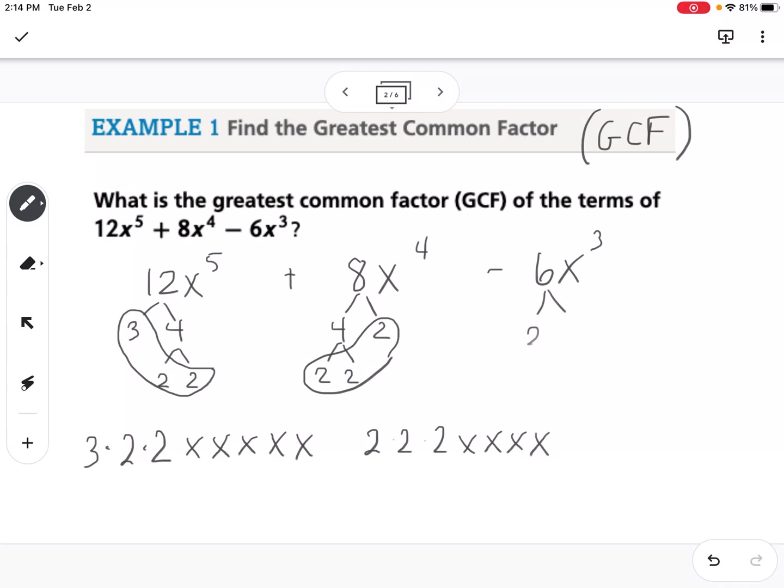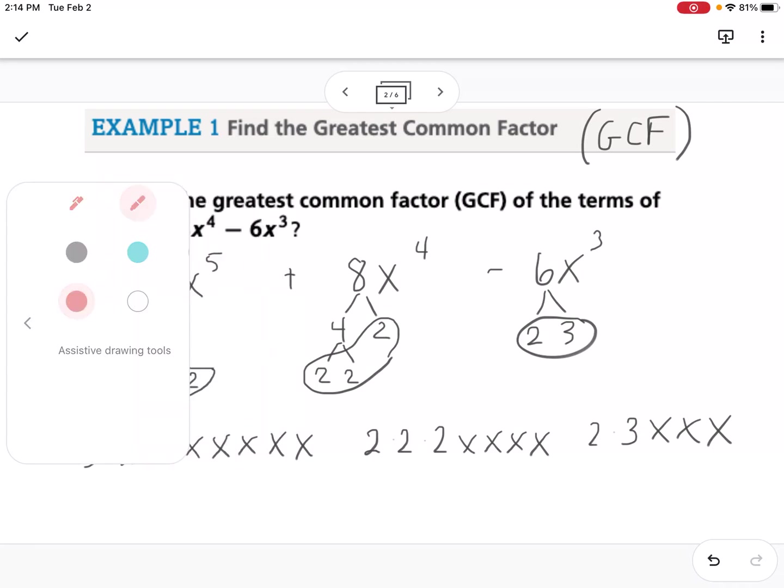And then 6 is 2 times 3, which I can't simplify any further. So 2 times 3, and 3 x's. So what I want to do is with all of those factors written out, I want to circle the biggest thing that I can take out of all of them.